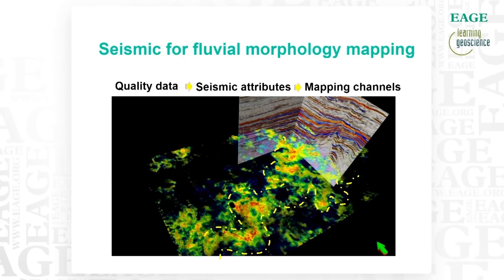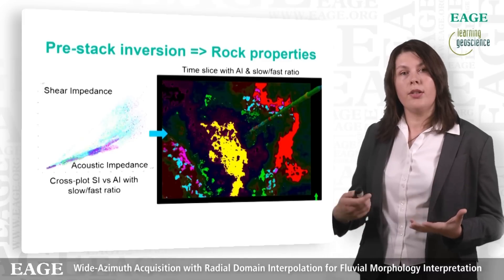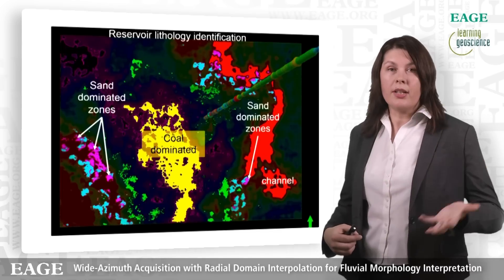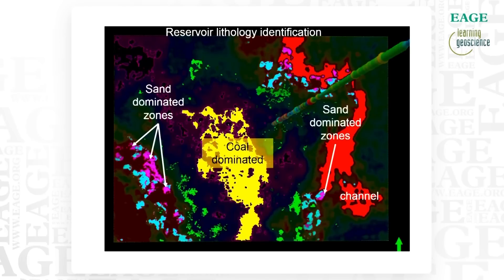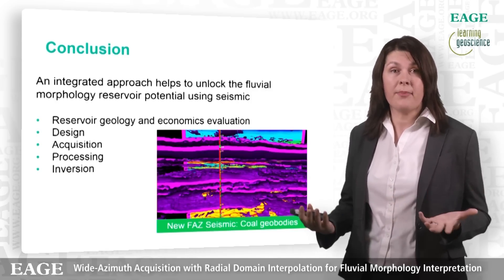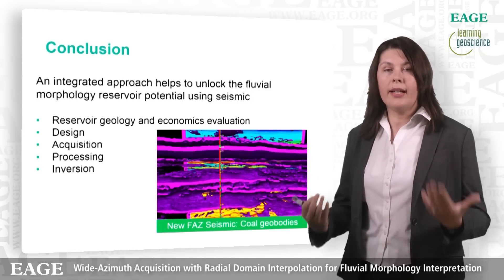With this new high quality data we can extract seismic attributes and map those channels. Here is an example of attribute extraction from the post-stack seismic volume — you can see the meandering channel body meandering through the seismic. Alternatively, we can use pre-stack seismic data, invert it to extract rock properties, correlate with well data, and map it back into the seismic attribute volume to identify zones of potential interest — all with the aim to reduce drilling risk. I believe I have demonstrated that the integrated approach helps to unlock fluvial morphology reservoir potential using seismic, following the process from reservoir geology and economics evaluation through survey design, state-of-art seismic acquisition and processing, all the way to inversion and advanced seismic interpretation.